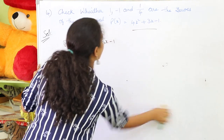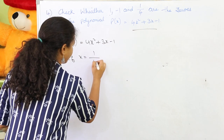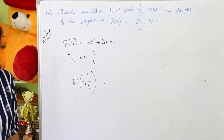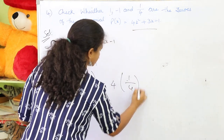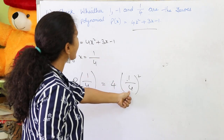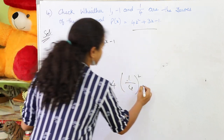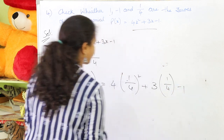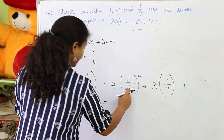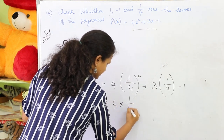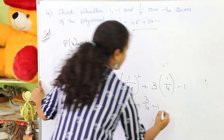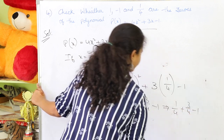If x = 1/4, then p(1/4) = 4 × (1/4)² + 3 × (1/4) - 1. Now (1/4)² = 1/16, so 4 × 1/16 = 4/16 = 1/4. And 3 × 1/4 = 3/4, minus 1. So we have 1/4 + 3/4 - 1.